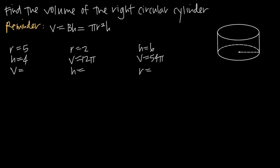In this video, we're talking about how to find the volume of a right circular cylinder. Let's talk about what we mean by right circular cylinder. We start with a cylinder — this three-dimensional shape or object. Circular means that the top and bottom, or the base and the top of the cylinder, are circles. Right circular means that there are right angles — 90 degree angles — between the base, the top, and the sides of the cylinder.